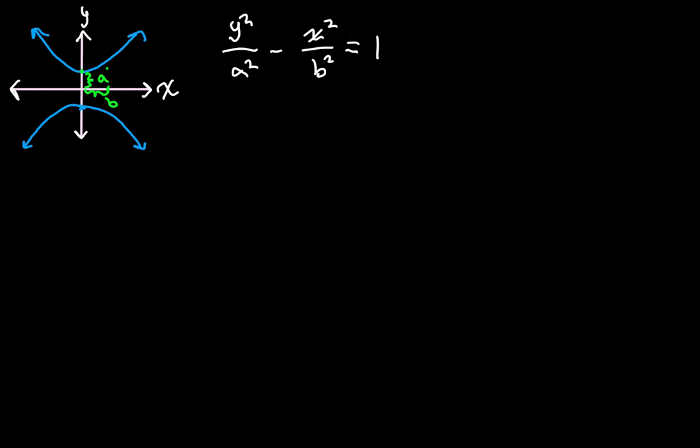And the coefficient on y² is positive because our hyperbola is touching the y-axis. It's going in the vertical direction. Whereas in the last video, we had x² with the positive coefficient and y² with a negative because it was the other case, a horizontal hyperbola like that. But that's not what we're dealing with today.